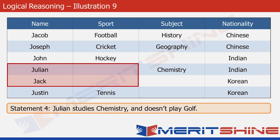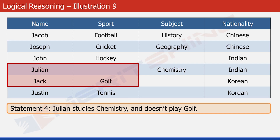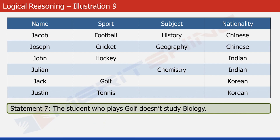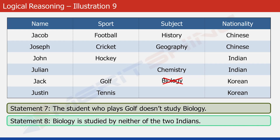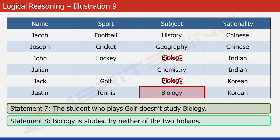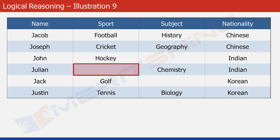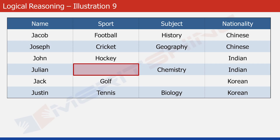Looking at statement four again — it tells us that Julian doesn't play golf. So Jack has to play golf because there is no other option. Statement seven tells us that the student who plays golf doesn't study biology, meaning Jack doesn't study biology — let's mark a cross for biology in Jack's row. Statement eight says that biology is studied by neither of the two Indians. One Indian studies chemistry, so let's put a cross for biology in the other Indian's row. Now the only place left for biology in the subject column is Justin's row. And the only sport left to fill is baseball — so let's write baseball in that cell.